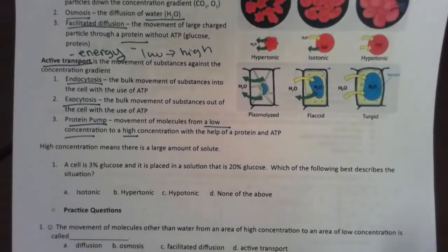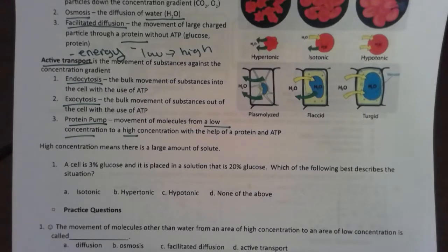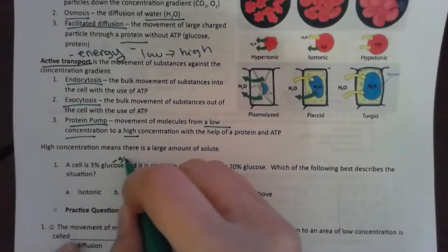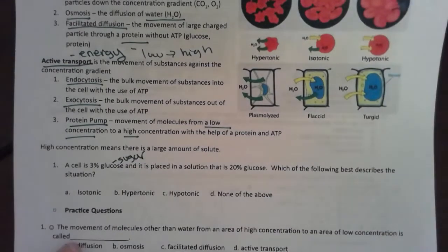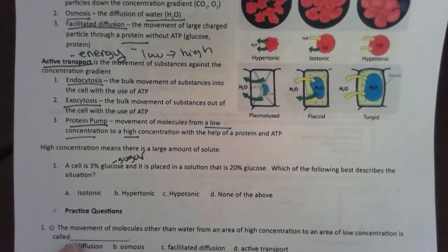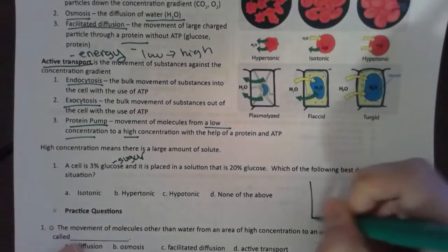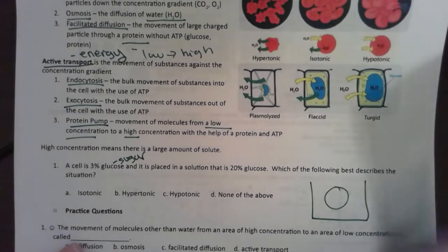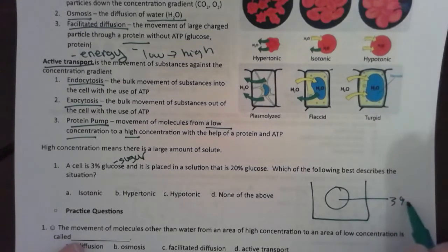Let's look down here. A cell is 3% glucose, and it is placed in a solution with 20% glucose. That means I need to draw one of these really lovely things. Cell has 3% glucose, and then the solution has 20% glucose.